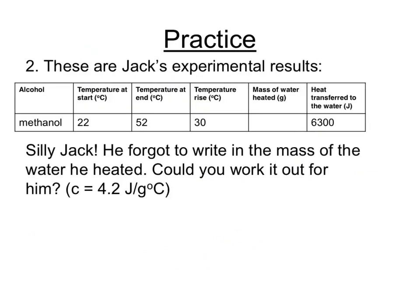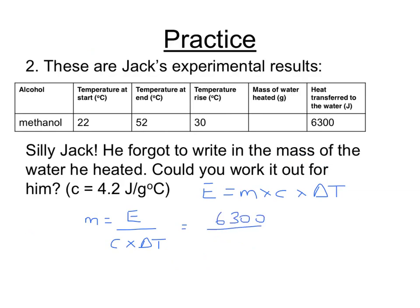Here's another question. Here's Jack's experimental results — he forgot to write in the mass of the water he heated. Using E = M × C × ΔT, and rearranging, M equals E divided by C times delta T. The energy is 6,300, C is 4.2, and delta T is 30 degrees. This comes out to 50 — so it would be 50 grams.